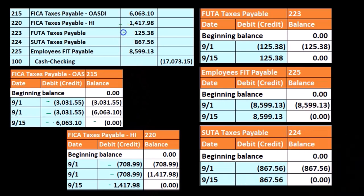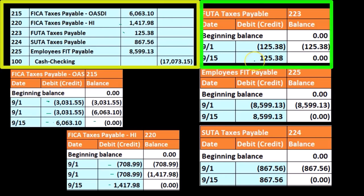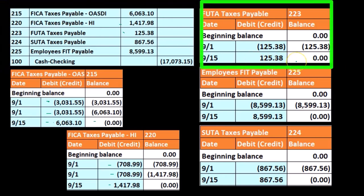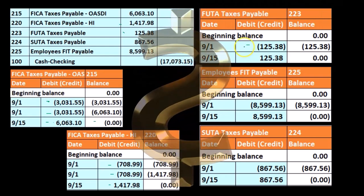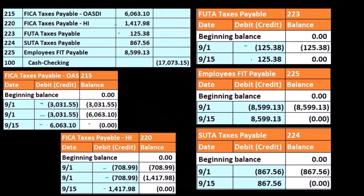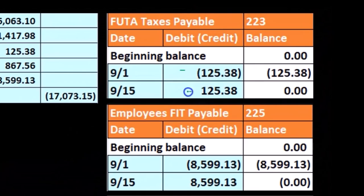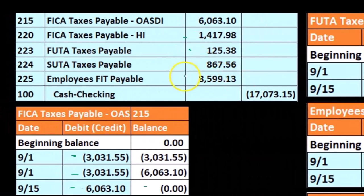For FUTA, it was at $125.38 — then we paid $125.38 and it goes back down to zero. Note there's only one portion here — only the employer portion — and then we paid off the employer portion. There's no matching entry. We can see that in the GL.